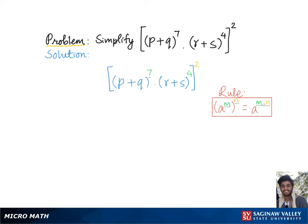Here in our problem we have (p + q) raised to the seventh power times (r + s) raised to the fourth power, and the whole group raised to the second power.